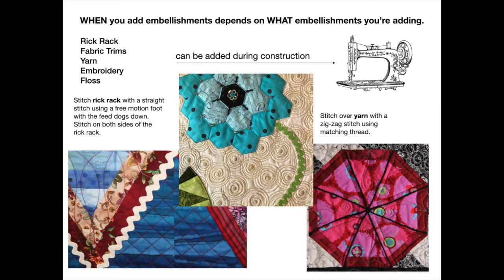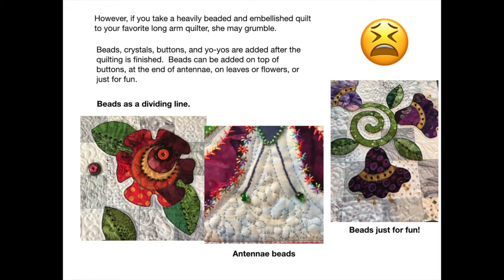When you add the embellishments depends on what embellishments you're adding. Rick-rack, fabric trims, yarn, embroidery, and floss can all be added during the construction part. The way that I add rick-rack to a quilt is I use a straight stitch with my free motion foot and the feed dogs are down — I stitch on both sides of the rick-rack. If you're adding yarn to a quilt, you can stitch over the yarn with a zigzag stitch using matching thread. However, if you take a heavily beaded and embellished quilt to your favorite long-arm quilter, she may grumble. Beads, crystals, buttons, and yo-yos are added after the quilting is finished.